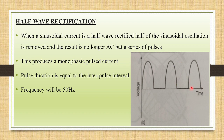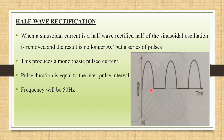In half wave rectification, the sinusoidal wave pulses alternate with interpulse intervals. The sinusoidal wave duration is equal to the pulse duration — for example, one millisecond of on time and one millisecond of off time. The frequency will be 50 Hz and the pulse duration will be equal to the interpulse interval.